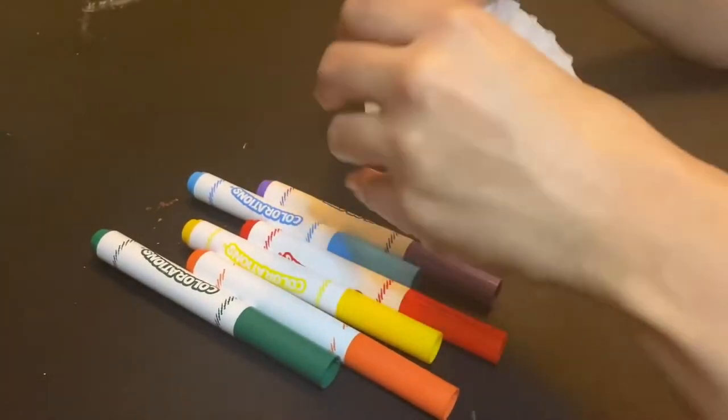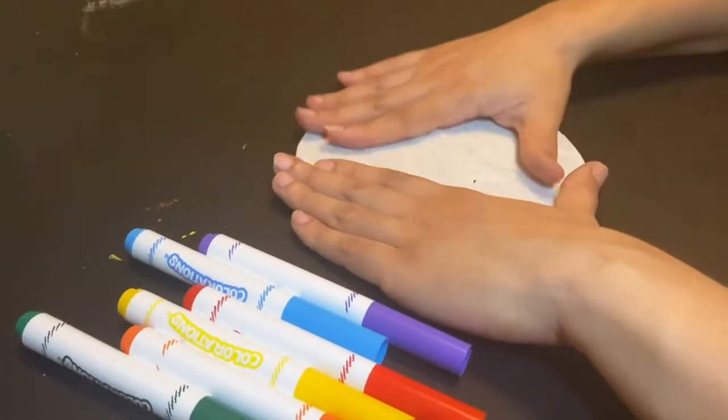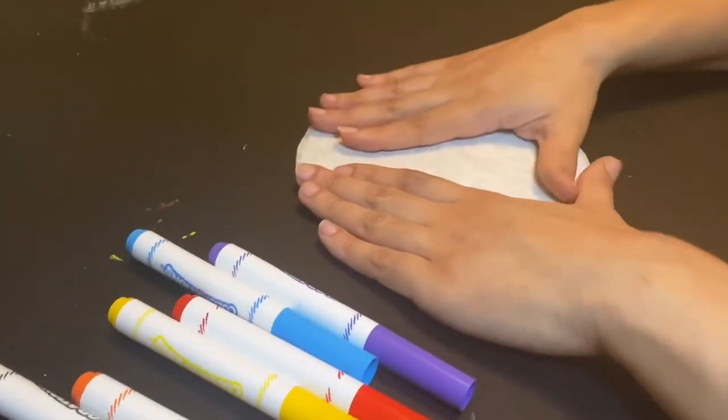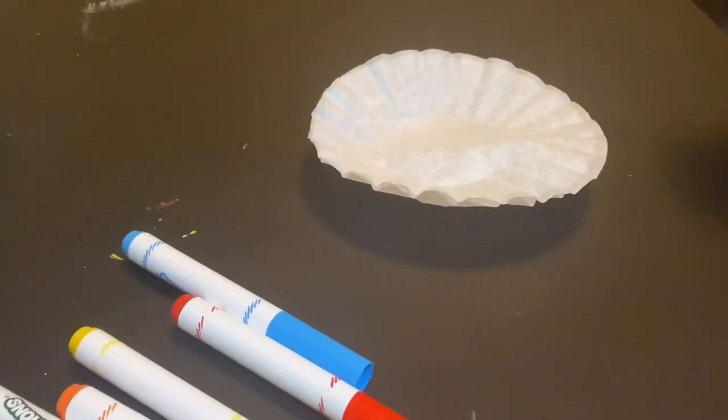The first thing we want to do is take our coffee filters and just press them out flat on the table. Once they're all flat, you can use your markers and you're going to decorate it in any pattern or any way that you like.